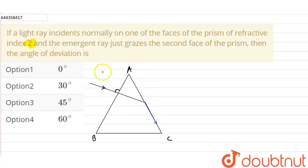After the emergence from the second surface, this is our normal. Okay, now this is the angle of prism A.